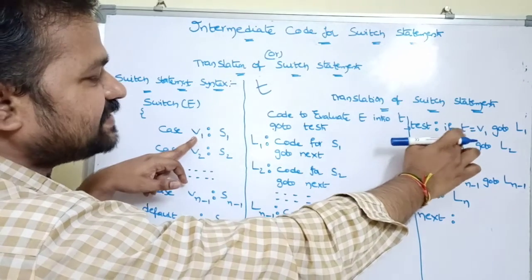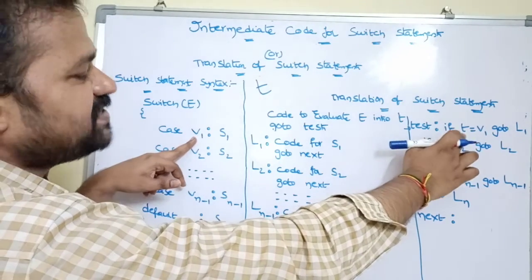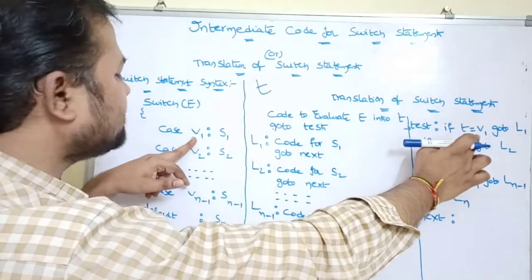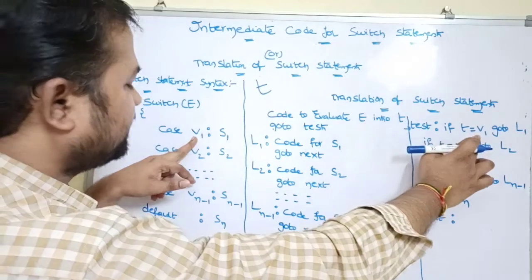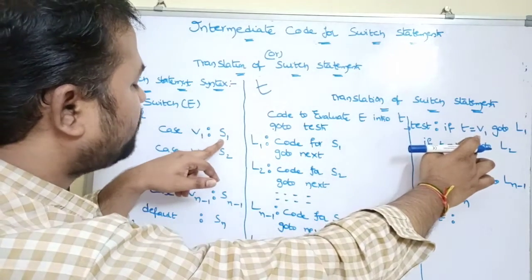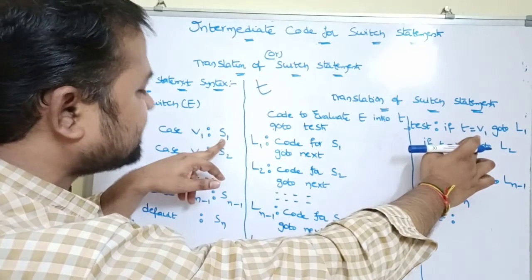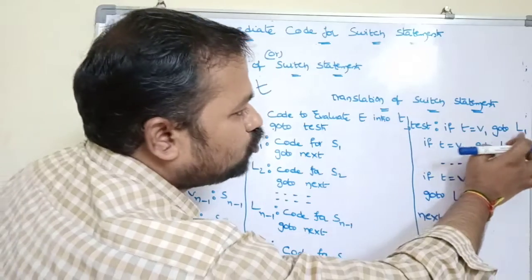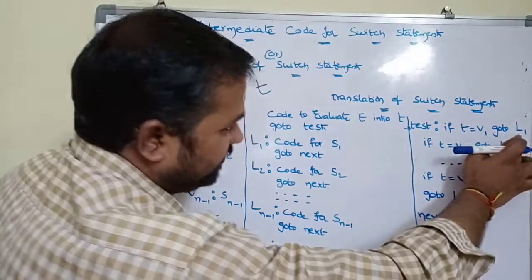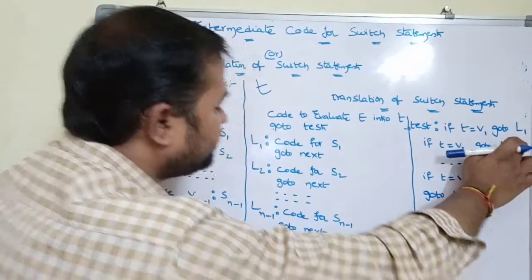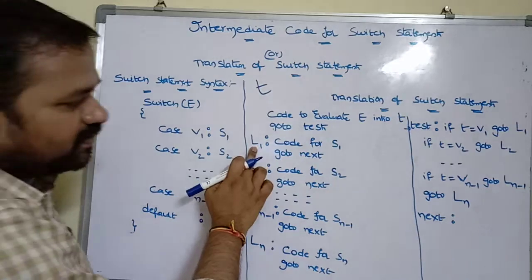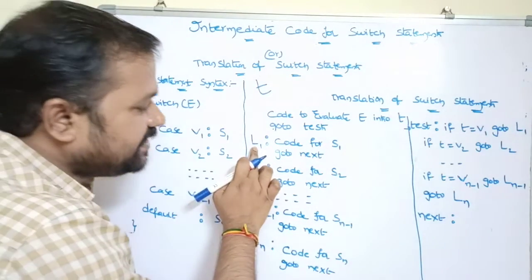t is the result of the expression. So if t equals v1, we execute s1 by transferring control to L1 via 'goto L1'. In L1, the code for s1 is written.